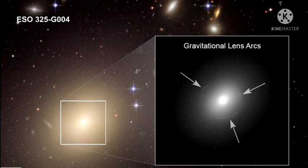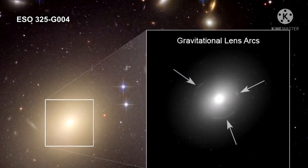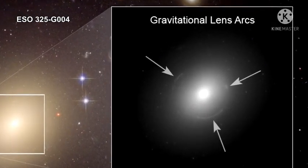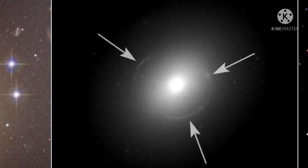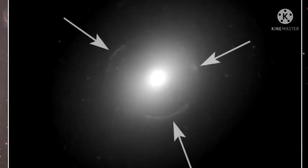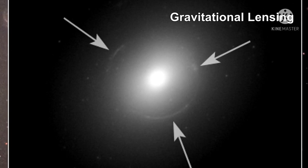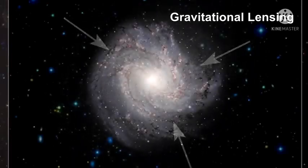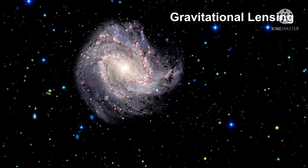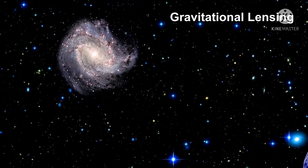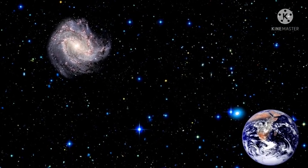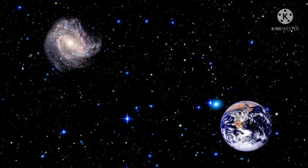You'll remember the Einstein ring we saw around ESO 325-G004 in our segment on local superclusters. The ring was the image of a more distant galaxy. The arc shape was created by the bending of the background galaxy's light by the gravity of the massive foreground galaxy. The process is called gravitational lensing because the mass between us and the background galaxy behaves just like an optical lens.